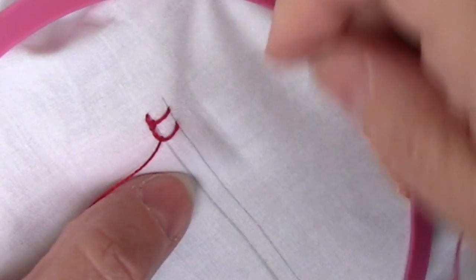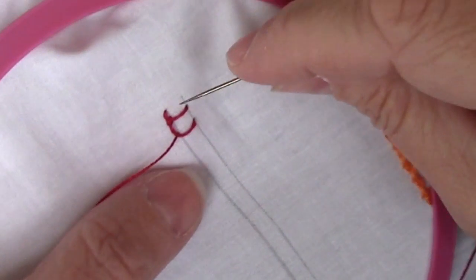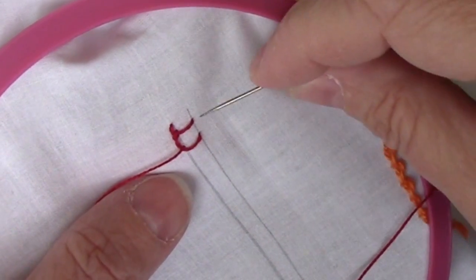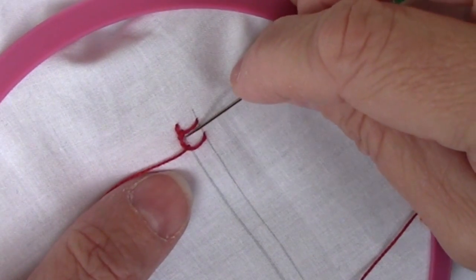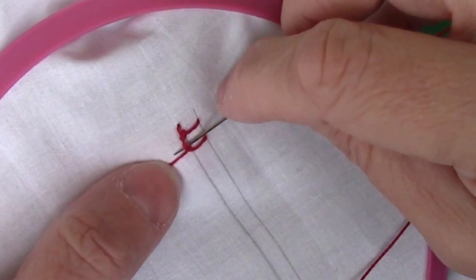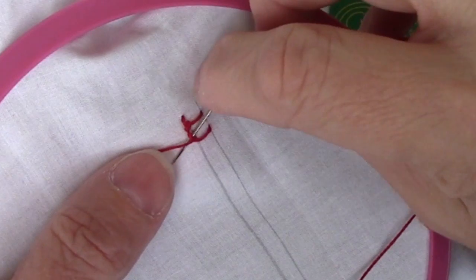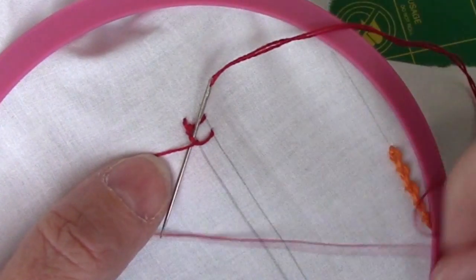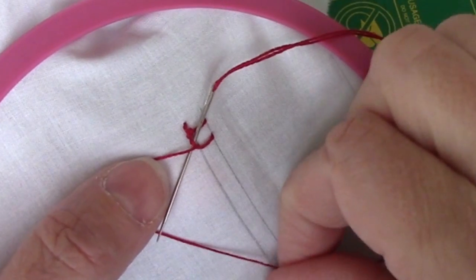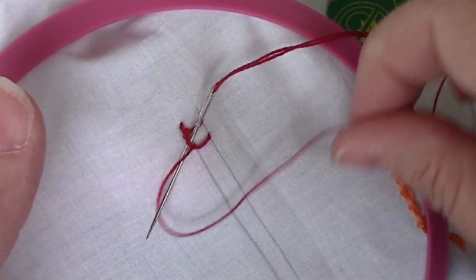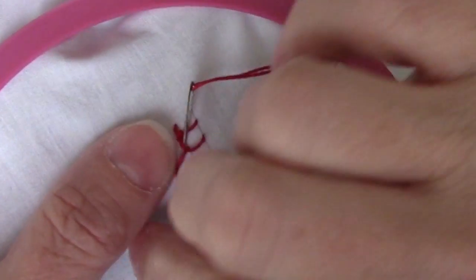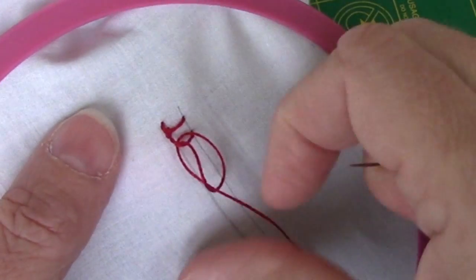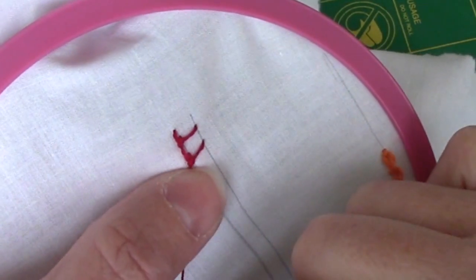And this stitch looks nicest if it's done in heavy thread. This is a size 8 pearl cotton. It looks even better in heavier thread. I'm going under my horizontal bar. Then I'm kind of twisting my needle over to which direction my stitch is going. I'm bringing my working thread under the needle and pull through, which is what makes our little knot.